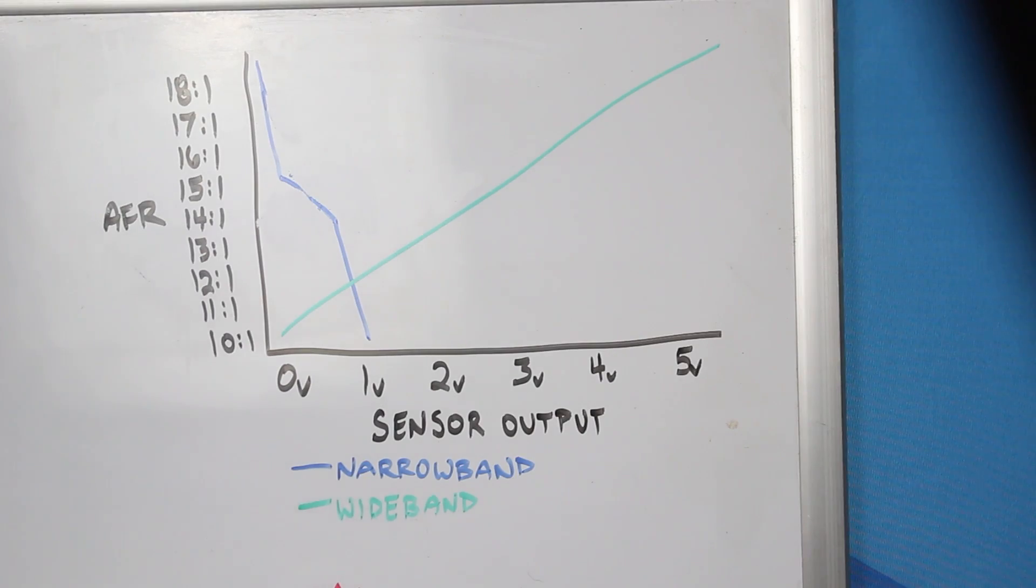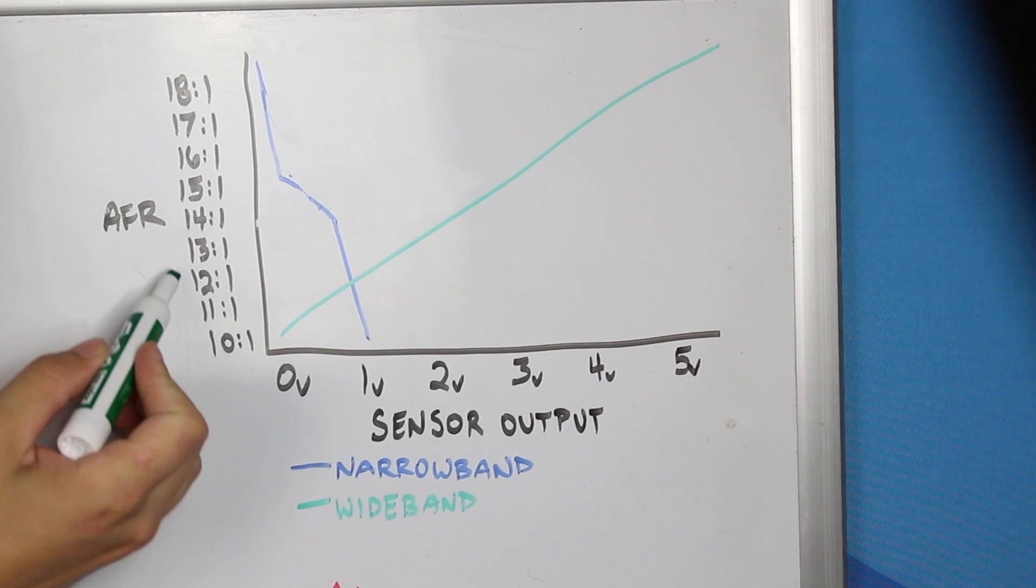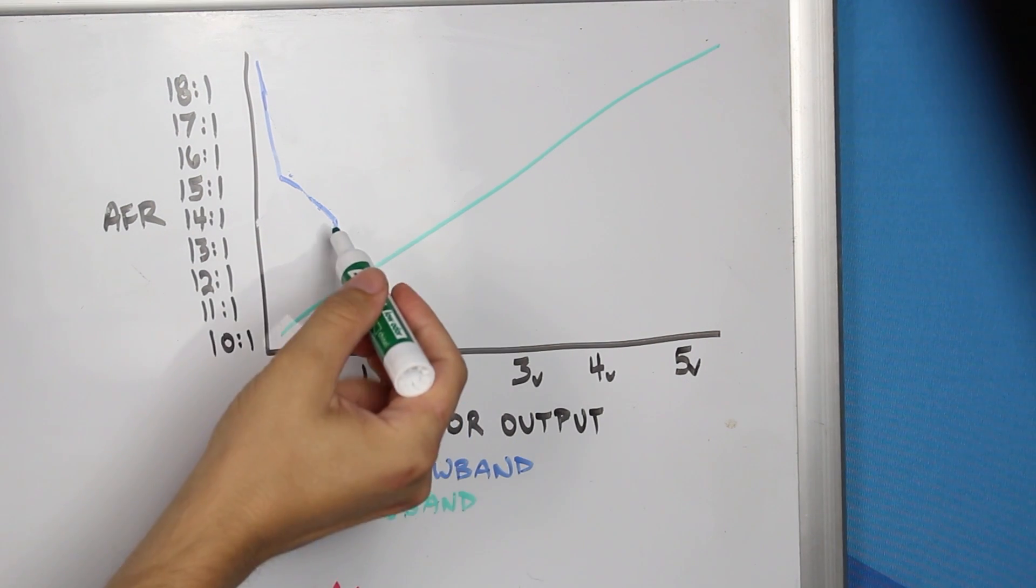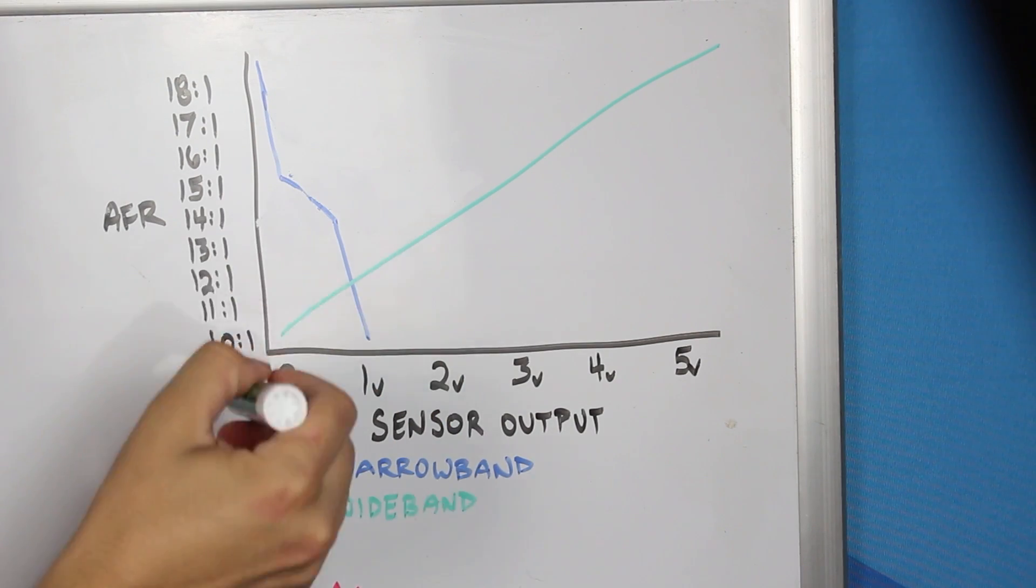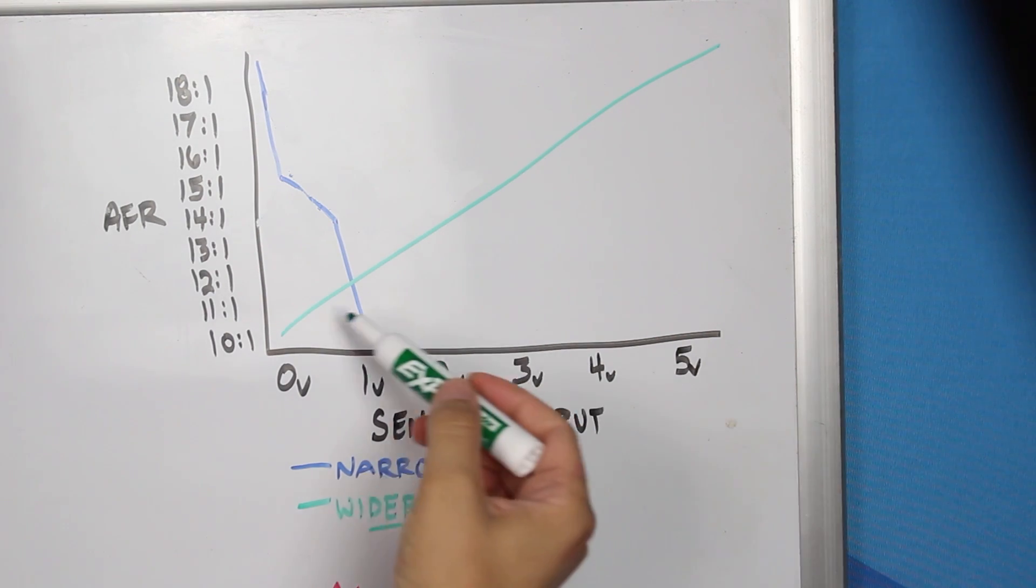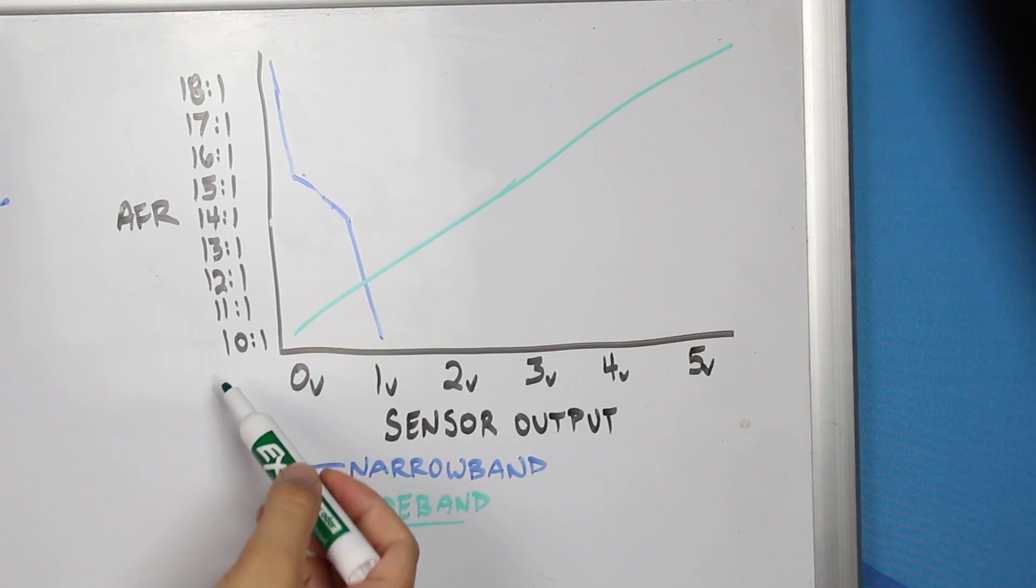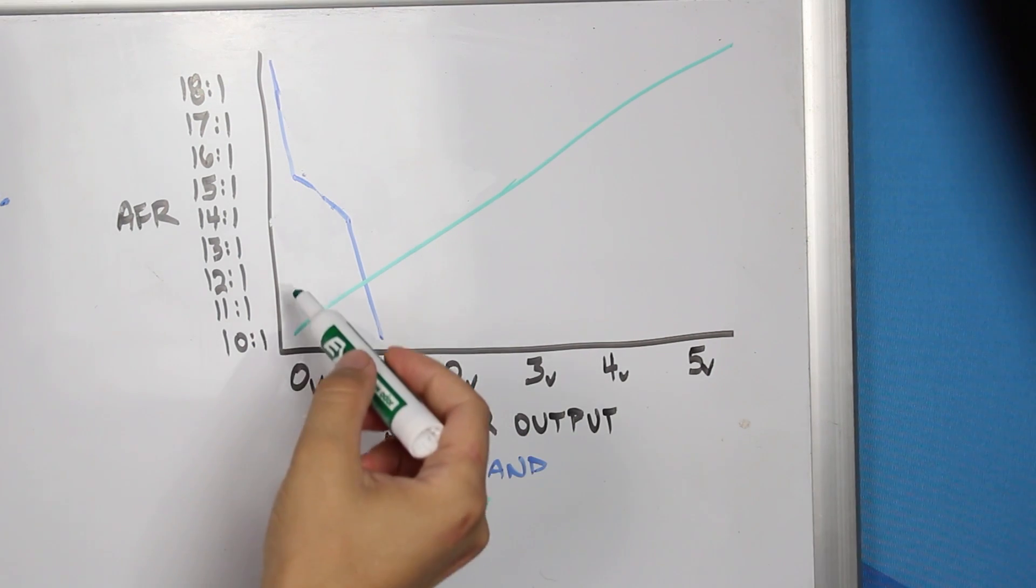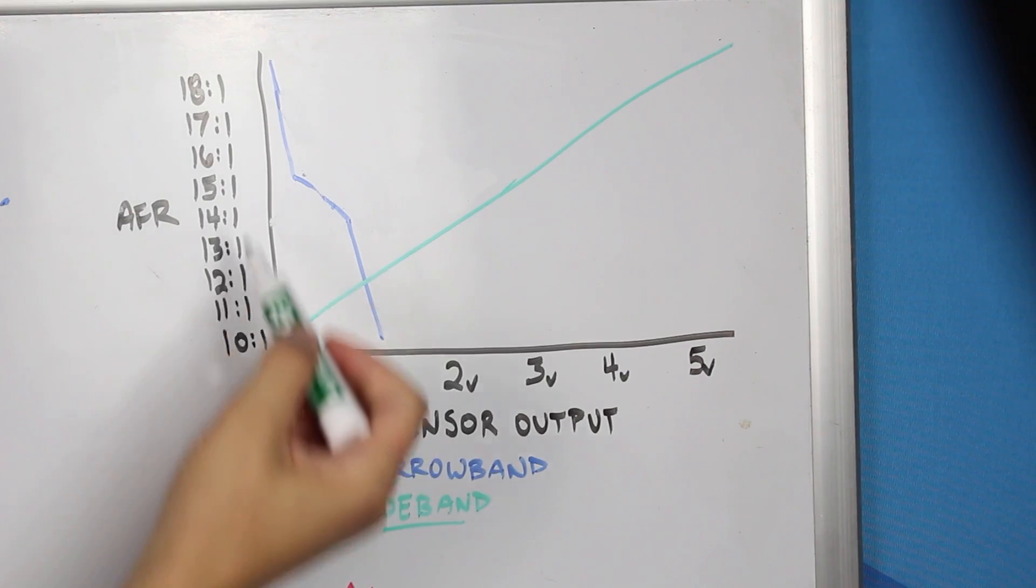But what happens when we need to target a certain AFR that's outside of that range? A narrowband sensor simply doesn't, it just can't read it, it cannot see it. And that's where widebands come in. On a turbocharged engine you're going to be targeting around 11 and a half to 1 AFR in boost. The problem with the narrowband sensor here is whether you're at 13 to 1, 12 to 1, 11 to 1, 10 to 1, that sensor is just going to be putting out one volt the entire time. It doesn't know the difference between any of these numbers. However, a wideband sensor has infinite resolution between all of these AFRs. It's a zero to five volt signal and it can tell you exactly what the AFR is everywhere from super rich to super lean.